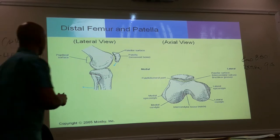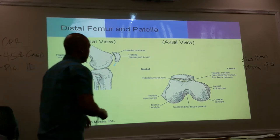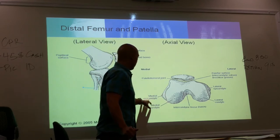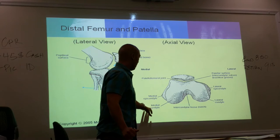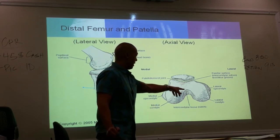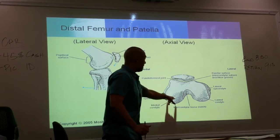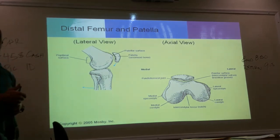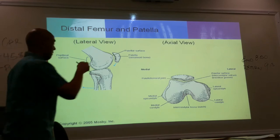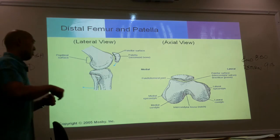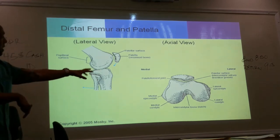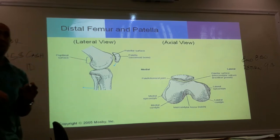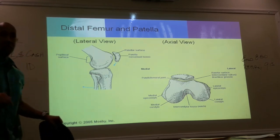Now for the distal femur and patella. Here is the inferior view of the femur. You have a medial epicondyle and medial condyle, and laterally a lateral epicondyle and lateral condyle. The condyles of the femur articulate with the condyles of the tibia — the femoral surface articulates with the tibial surface. The epicondyles are projections extending from the condyles that are not involved in the joint; only the condyles are involved.